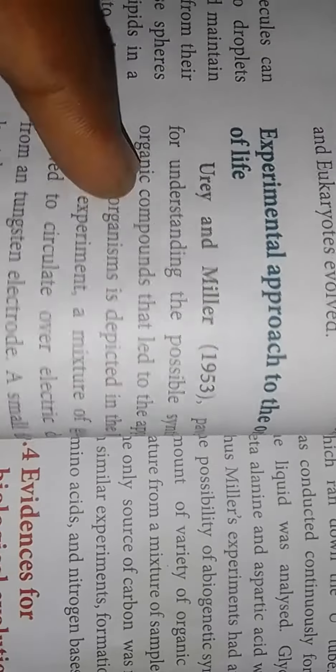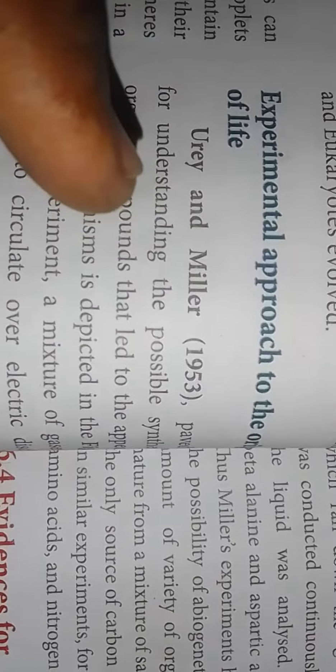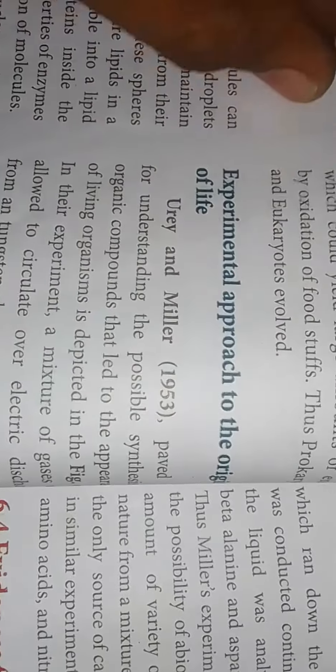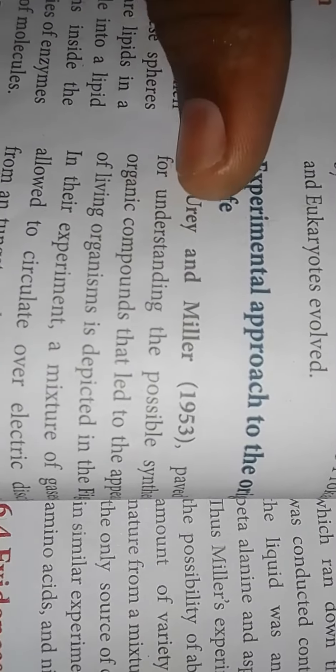The Urey-Miller experiment. Organics — this is a key step toward understanding the possible synthesis of organic carbon compounds that led to the appearance of the organism. That is the prebiotic organic synthesis.